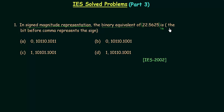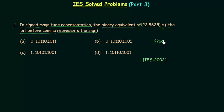The bit before the comma represents the sign. If you see the four options you will find we have 0, 0, 1, 1 before the comma, and they are the bits representing the sign of the binary number. They are the sign bits and they represent the sign of the binary number.